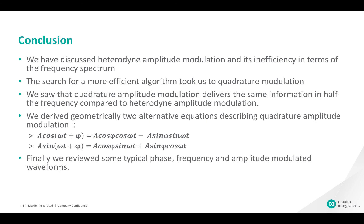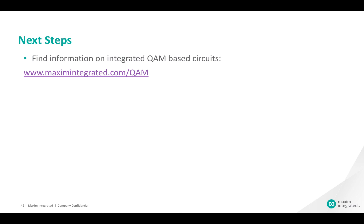Let's summarize what we've learned. We have discussed heterodyne amplitude modulation and its inefficiency in terms of the frequency spectrum. The search for a more efficient algorithm took us to quadrature modulation. We saw that quadrature amplitude modulation delivers the same information in half the frequency compared to heterodyne amplitude modulation. We derived geometrically two alternative equations describing quadrature amplitude modulation. And finally, we reviewed some typical phase, frequency, and amplitude modulated waveforms. To find information on wireless communication ICs which utilize QAM modulation, visit our website at MaximIntegrated.com/QAM.